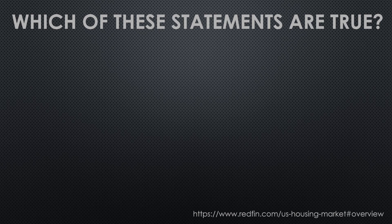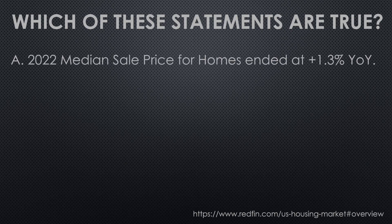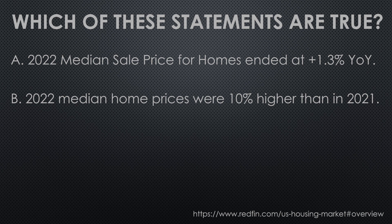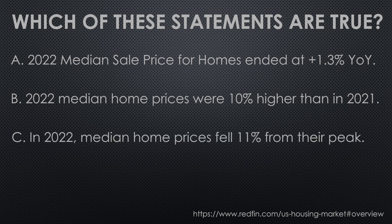Based on a singular set of data from the website Redfin, I want you to tell me which of the following statements are true. A: 2022 median sale price for homes ended at 1.3% year-over-year. B: Median home prices were 10% higher than in 2021. Or C: In 2022, median home prices fell 11% from their peak. Pause the video and tell me which one you think is true.